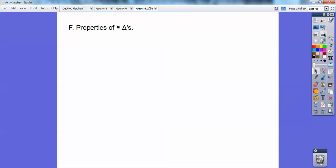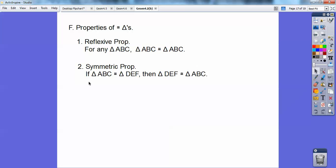So properties of triangles. Reflexive property. Reflexive happens a lot. Any triangle equals itself right here. Symmetric property right here. If triangle ABC is congruent to triangle DEF, then flip them around, and you can say DEF is congruent to ABC. Transitive property. If ABC is congruent to DEF, and then DEF is congruent to JKL, then ABC must be congruent to JKL. That's the transitive property.